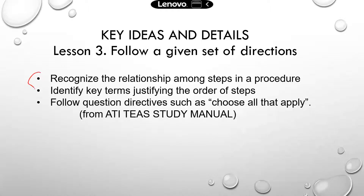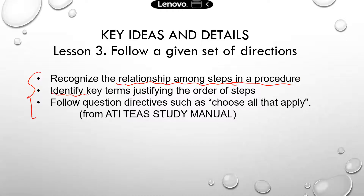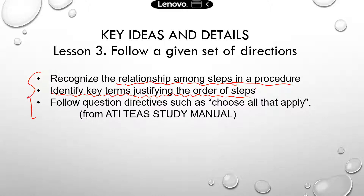Here are the learning objectives from the AT-IT state manual. You need to recognize the relationship among different steps in the procedure — what happens first, what happens next, and what happens last. You also need to identify key terms to help you justify the order of the steps. Key terms include things like first, second, next, after, last, or finally.